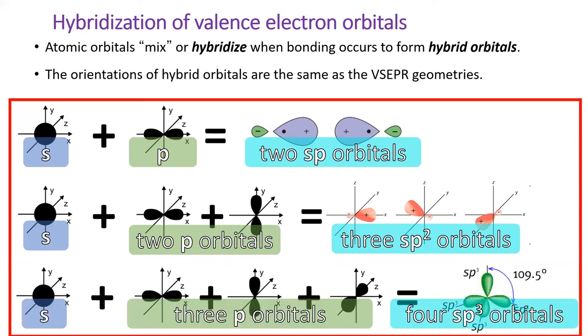If we mix together one S and three P orbitals, we get four SP³ orbitals. The SP³ orbitals are oriented in a tetrahedron.